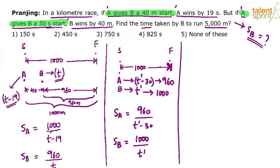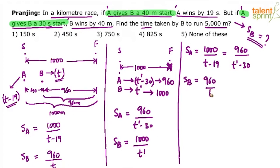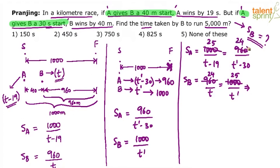Comparing speeds of A: 1000 divided by (T minus 19) equals 960 divided by (T' minus 30). Comparing speeds of B: 960 divided by T equals 1000 divided by T'. From the speed of B equation, cross multiplying gives T' equals 25T divided by 24.